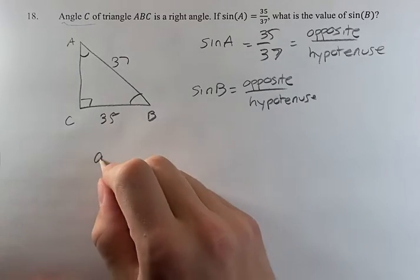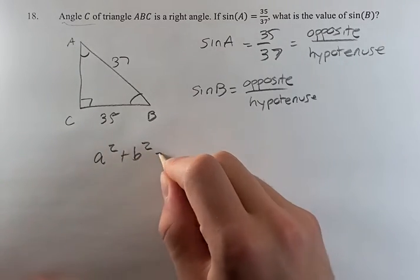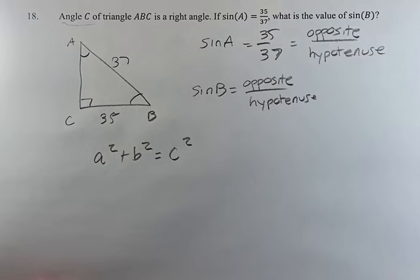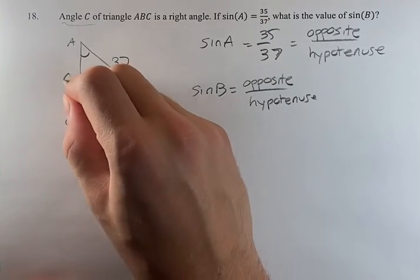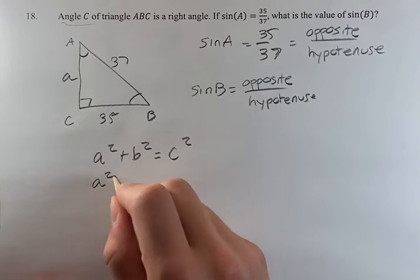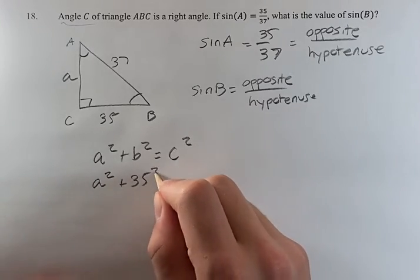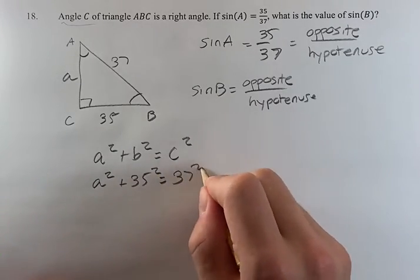But we can use the Pythagorean theorem: a squared plus b squared equals c squared. If this is a, we do a squared plus 35 squared equals 37 squared.